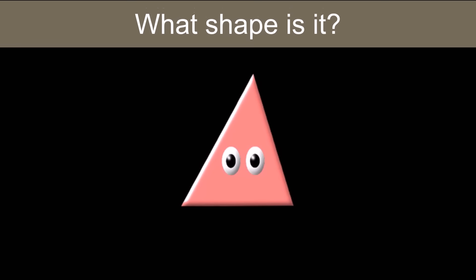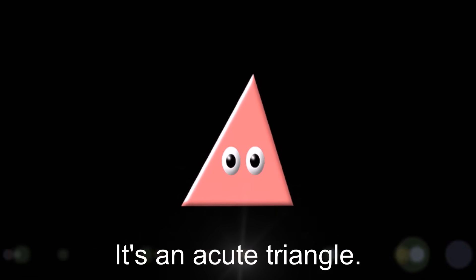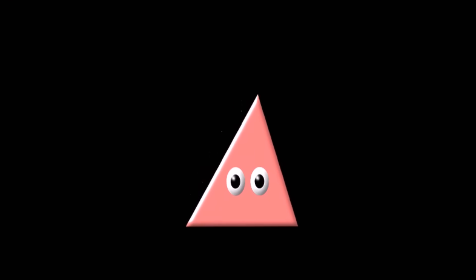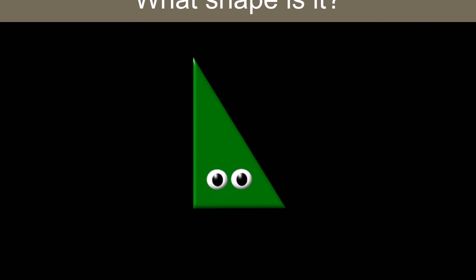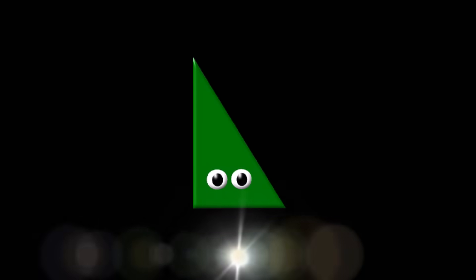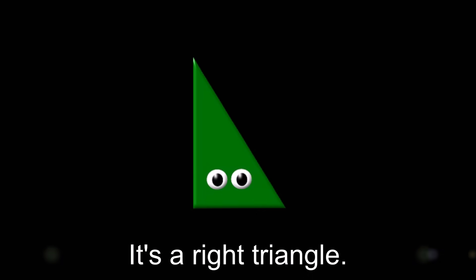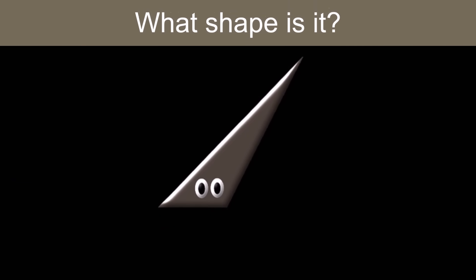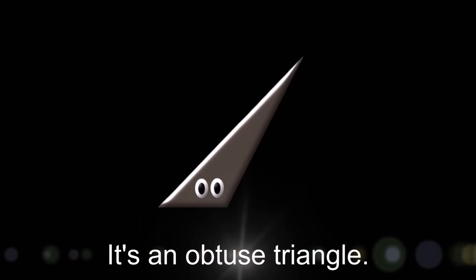What shape is it? It's an acute triangle. What shape is it? It's a right triangle. What shape is it? It's an obtuse triangle.